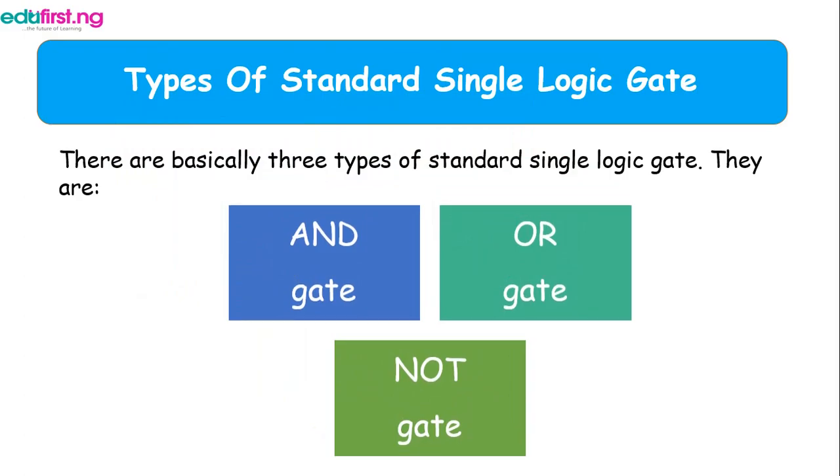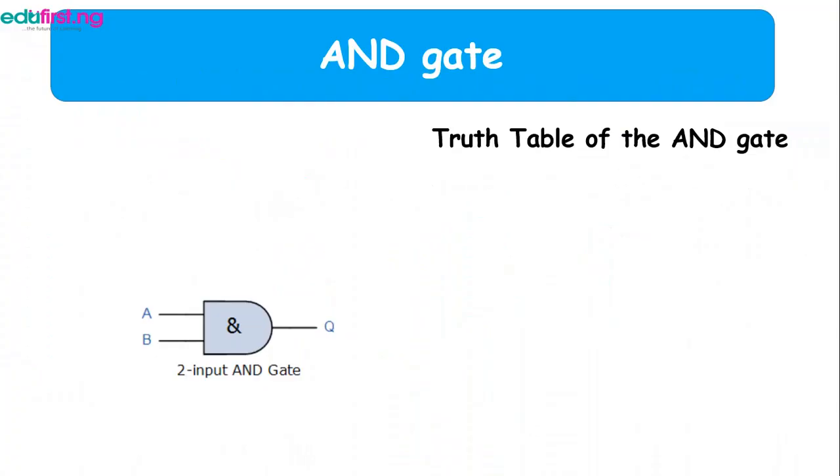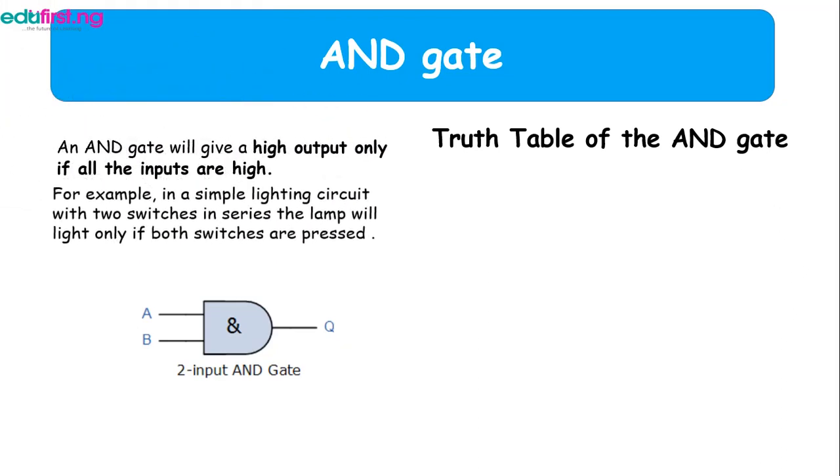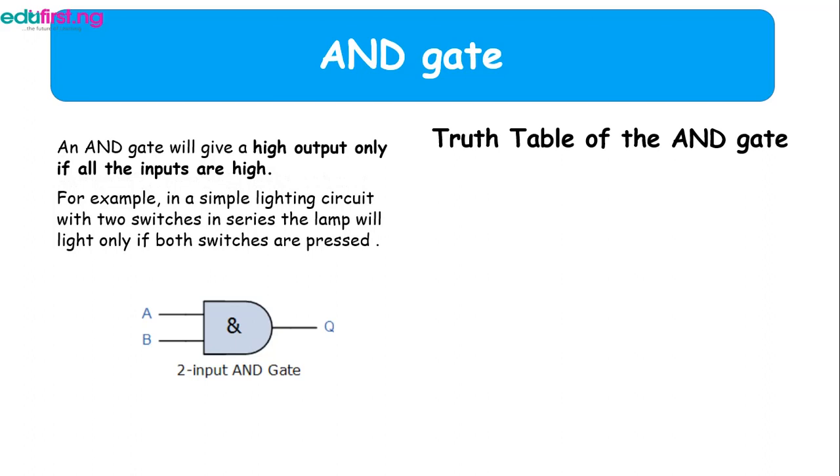Now first consider the AND gate. The AND gate will give a high output only if all of the inputs are high. Now high outputs are represented by 1, while low output is 0. An example is a simple lighting circuit that has two switches.